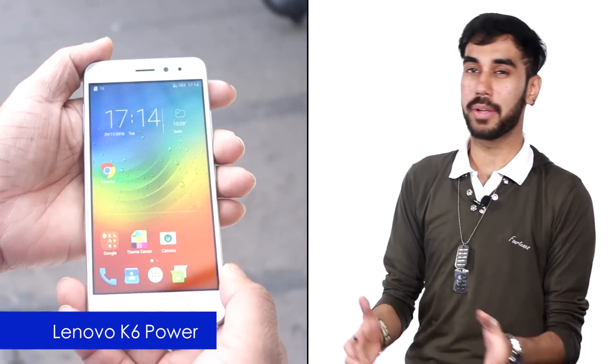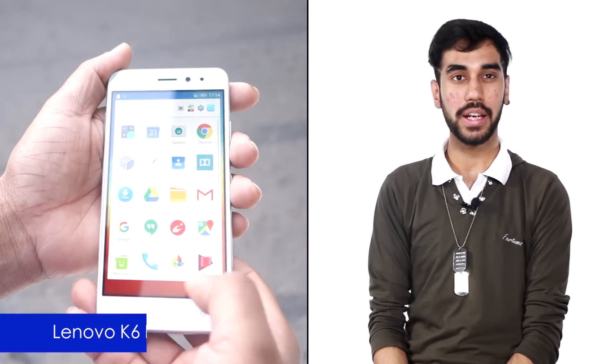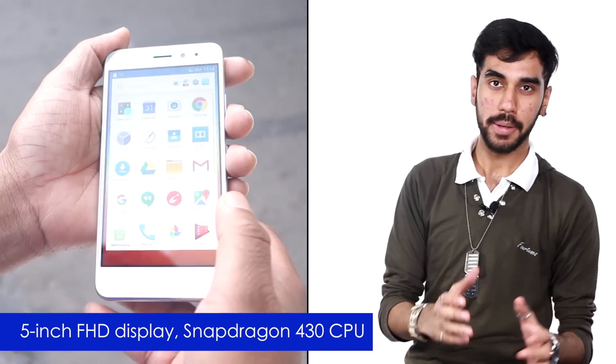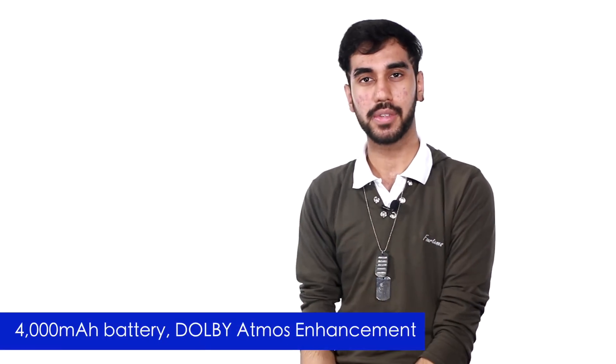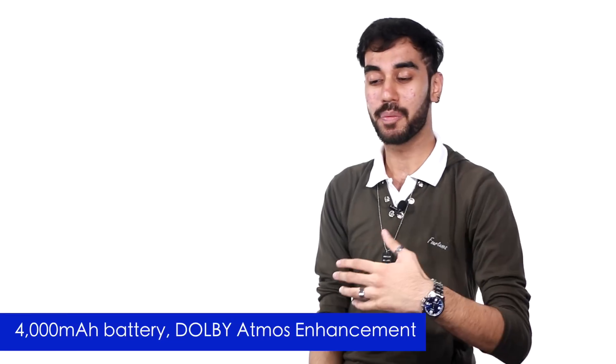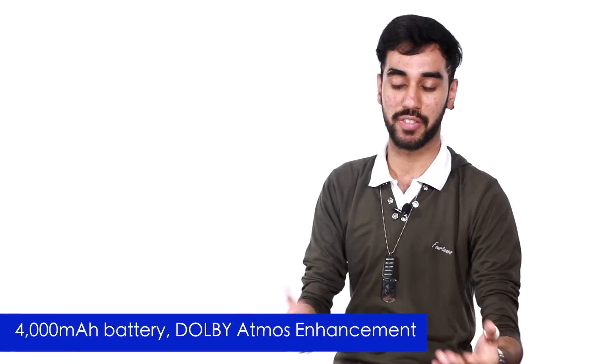After much tease and some delays, Lenovo K6 Power finally made its way to India. The phone has been launched now and it comes with a 5-inch Full HD display along with a Snapdragon 430 CPU. While the power of this phone is in its 4000mAh battery, some people would also appreciate the Dolby Atmos sound enhancements given on this one.